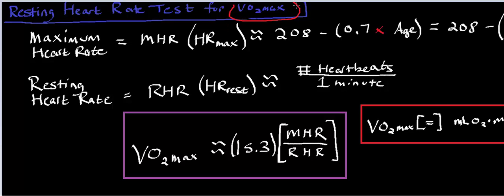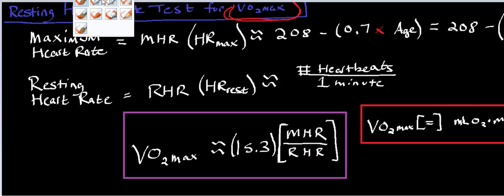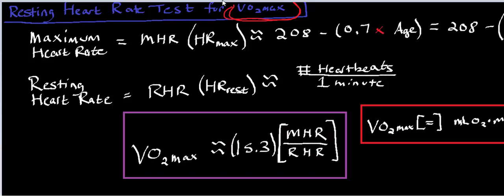We're going to look at one of the more common ways to estimate the VO2 max of a person. VO2 max is ultimately the maximum oxygen-consuming capacity of all the cells of your body. The higher the VO2 max, the more oxygen molecules your cells overall are able to consume per unit time. For aerobic respiration, which you probably learned about in a biology or Kinesiology course, oxygen is required at the very end of the entire pathway. So VO2 max is really a measure of the cardiovascular or cardiorespiratory health of the person.